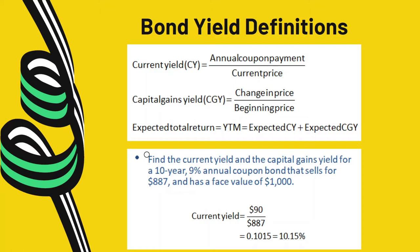Another type of bond yield is the current yield, which is easy to calculate: annual coupon payments divided by the current bond price in the market. For example, if the bond price is eight hundred and eighty-seven dollars, the coupon interest payment is 9 percent multiplied by one thousand dollar face value equals ninety dollars. The current yield equals 10.15 percent — as if you buy the bond today, hold it for one year, and receive the coupon payment.